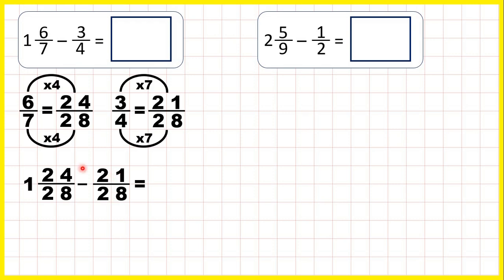Now if we subtract our fractions first, 24 28ths minus 21 28ths is 3 28ths because remember when we subtract fractions the denominator stays the same, and then we just have 1 minus nothing, so we still have 1 in our answer. So our answer is 1 and 3 28ths.